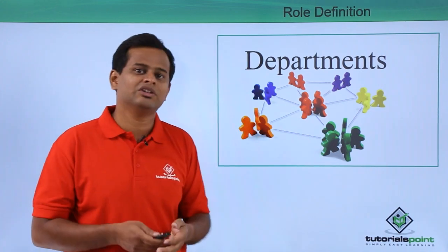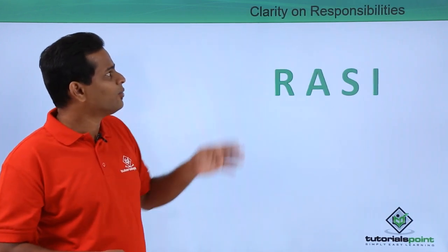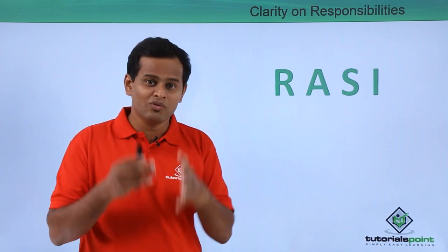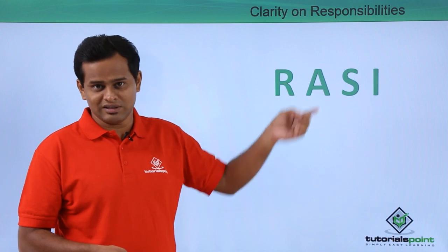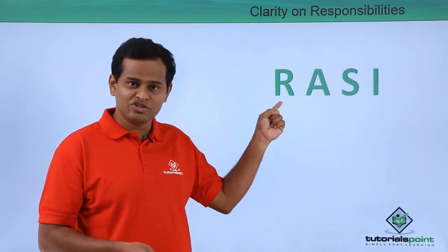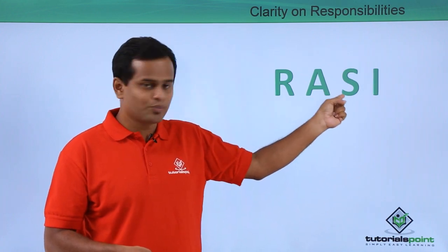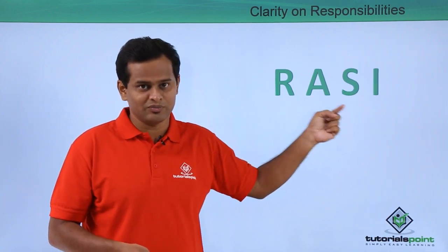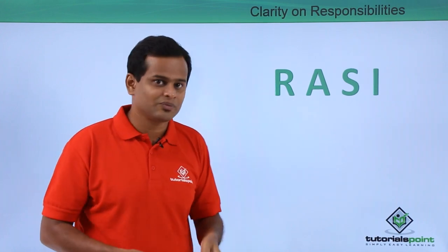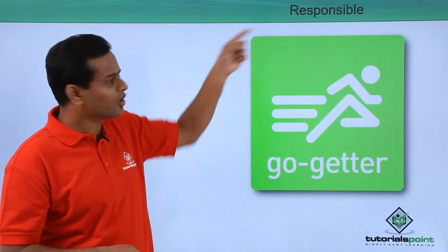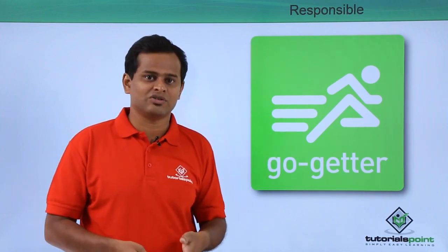For all other departments there should be very clear role definitions. When we talk about clarity of responsibilities, we need to understand RASI — that means Responsibility, Approval or Accountability, Support, and Information. We will understand each word in the next slides.